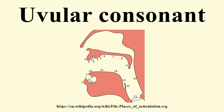Uvulars are consonants articulated with the back of the tongue against or near the uvula, that is, further back in the mouth than velar consonants. Uvulars may be stops, fricatives, nasals, trills, or approximants, though the IPA does not provide a separate symbol for the approximant, and the symbol for the voiced fricative is used instead.